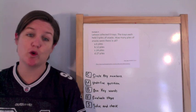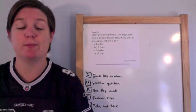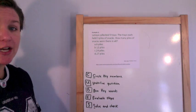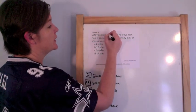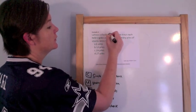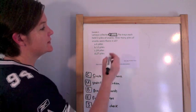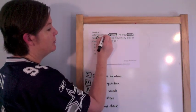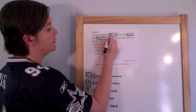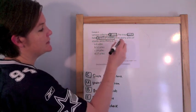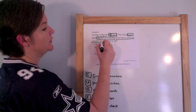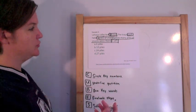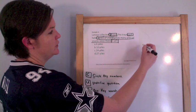Example 3 is a multiple choice item — another type you could see with this benchmark. It says: Latoya collected nine trays. The trays each held three piles of snacks. How many piles of snacks were there in all?